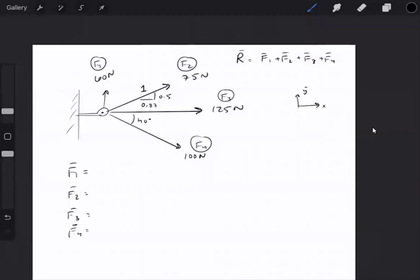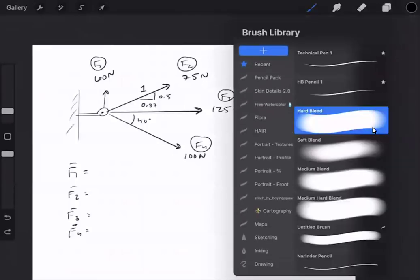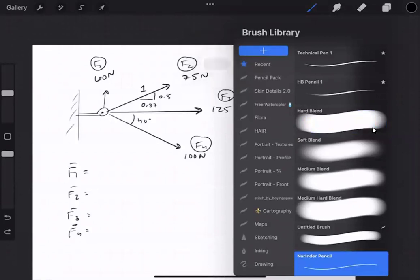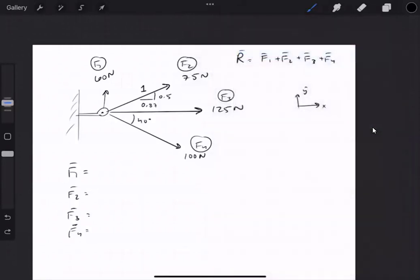In this example problem, we will be adding four vectors together. When you add two vectors together, you can use the law of sine or cosine, but that's not really helpful when you are adding multiple vectors together.